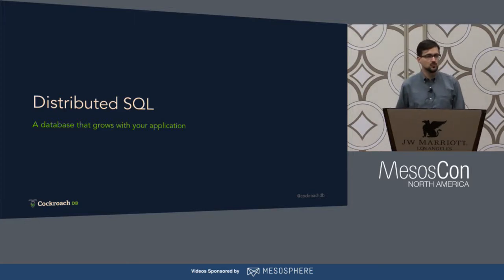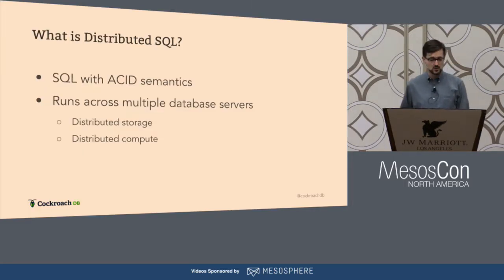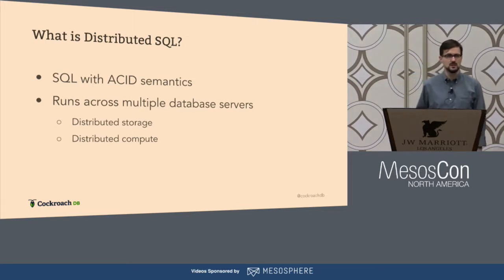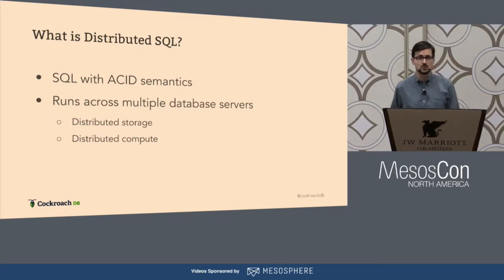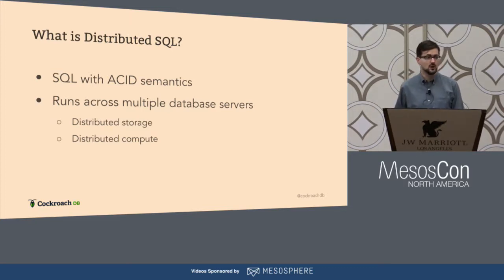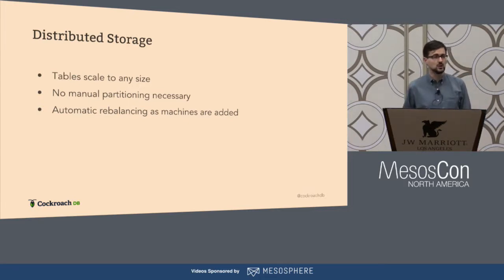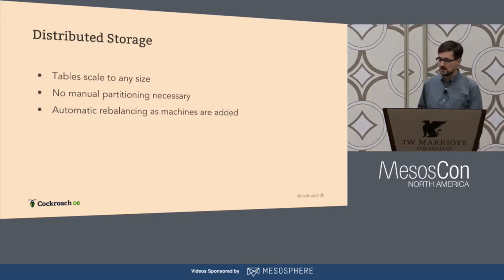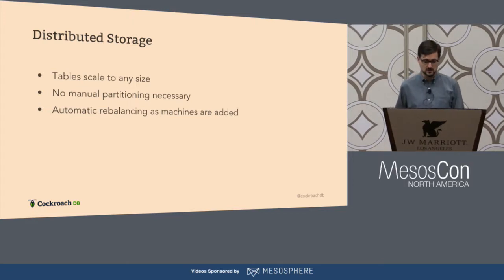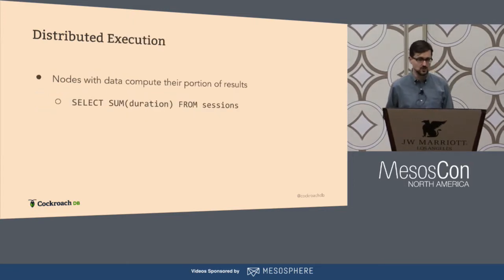Distributed SQL makes it possible for CockroachDB as a database to grow along with your application. This is full-fledged SQL with ACID semantics, indexing, joins — the whole deal — running across multiple database servers. Scaling is always transparent. Your tables can grow to any size. There's no manual partitioning or configuration needed as your data grows. You can just add more machines at any time and the data rebalances automatically across the pool within constraints that you can configure if you need to.